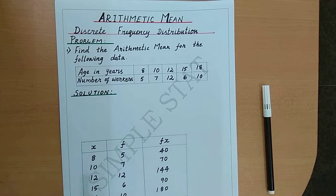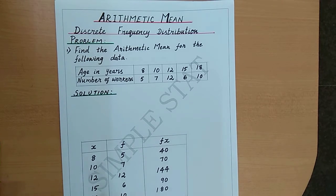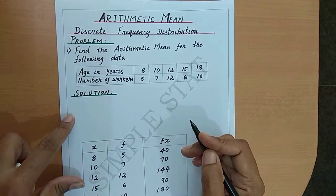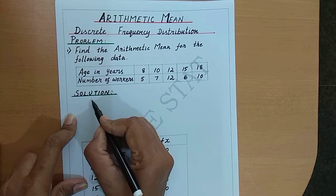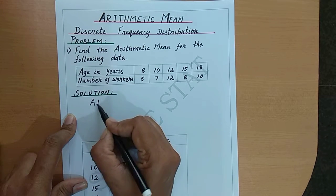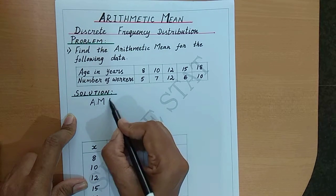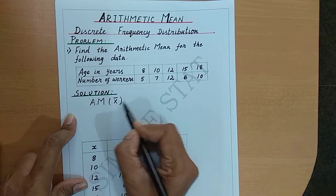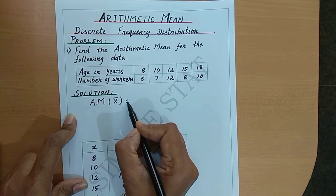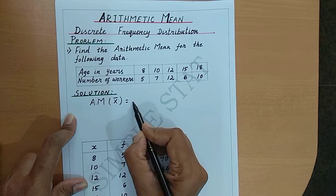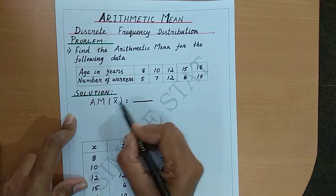For this data, let's now proceed with the solution. We know that arithmetic mean is abbreviated by AM and is denoted by the symbol x bar. The formula for calculating arithmetic mean for a discrete frequency distribution is x bar equals summation fx by n.